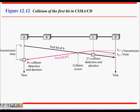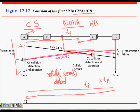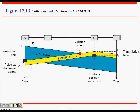In the diagram, the collision occurs and this is the part of the frame transmitted by C. C detects the collision first and aborts. Then at t4, A also detects the collision.